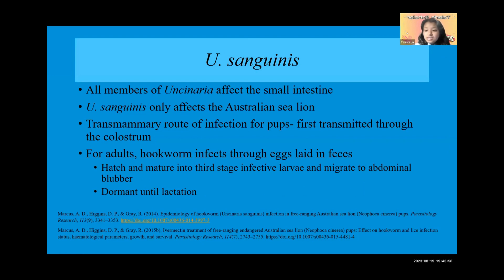Uncinaria is a genus of nematodes that affect the small intestine. They affect all mammals. Uncinaria sanguinis, however, only affects the Australian sea lion. It infects pups through lactation — they receive the infection first through the colostrum, which is the mother's first milk.